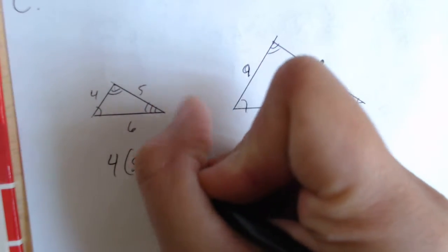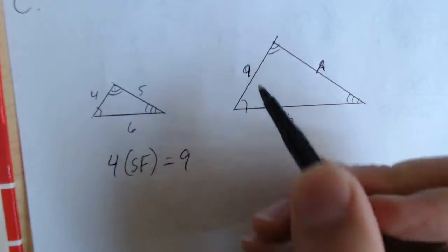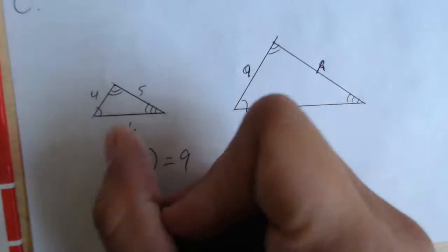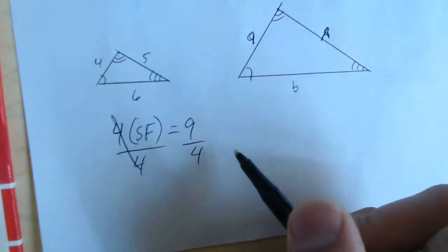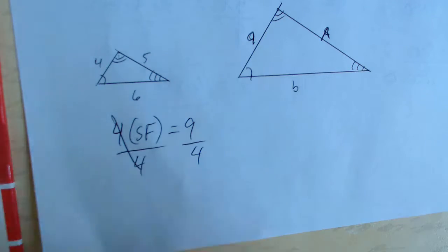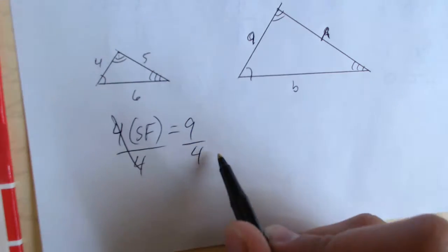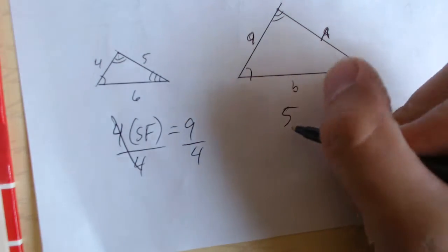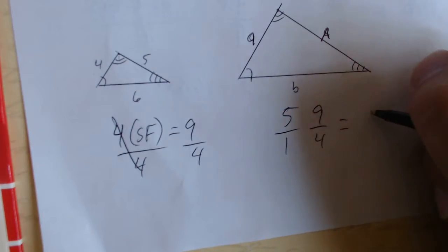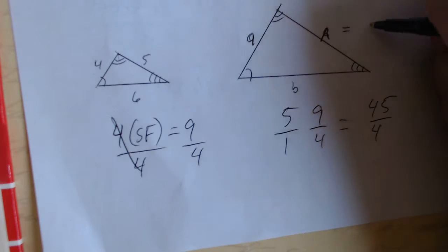4 times a scale factor would equal the length of 9. So, to find out what the scale factor is, we just divide by 4. And the scale factor is 9 over 4. So, if we want to find out what side A is, all we have to do is multiply 5 times the scale factor of 9 over 4. So, let's take 5 over 1 times 9 over 4. That gives us 45 over 4. So, A is equal to 45 over 4.